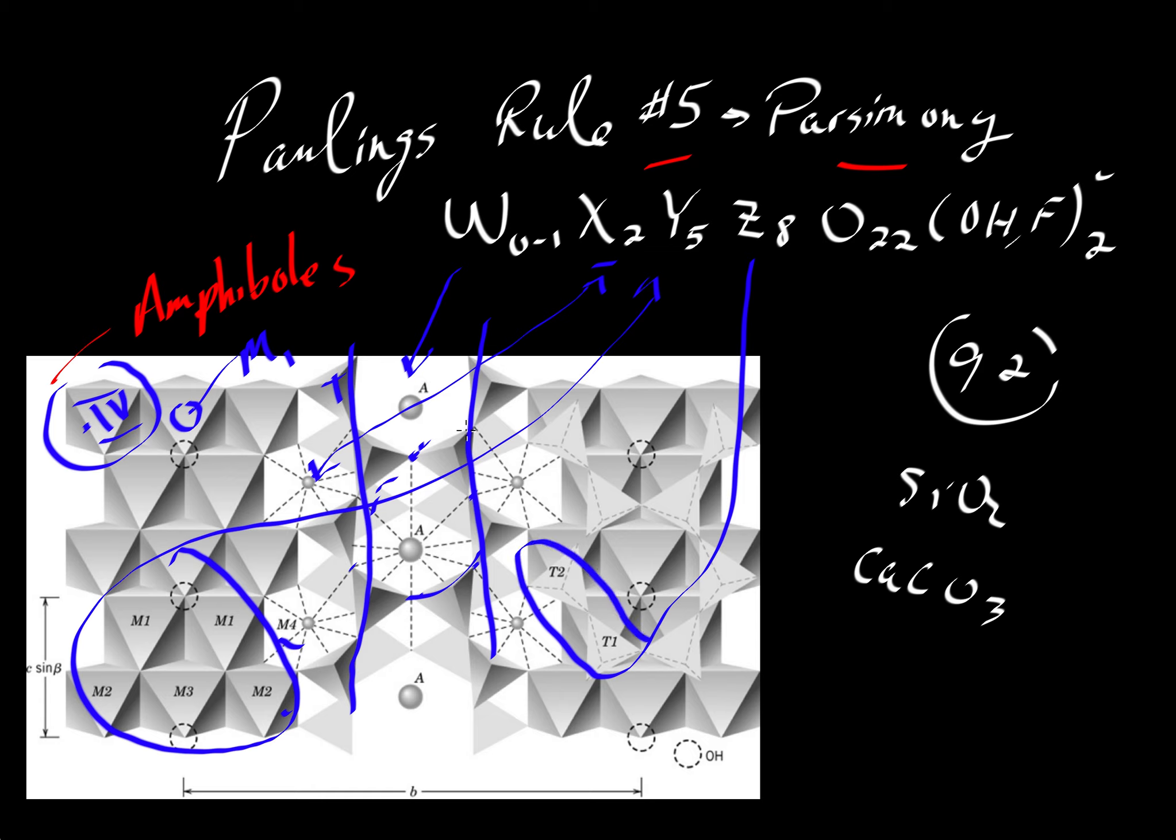And then the Z atoms would occupy the T1 and T2 sites. And then the oxygens form the corners in all of these. So we'd have an oxygen there and there and there, except where we have these dashed circles. Those dashed circles could be an OH. So we could have another oxygen there with a hydrogen attached to it. Or it could be a fluorine atom playing the charge balance role of hydroxyl.